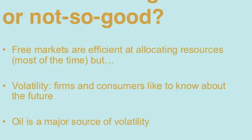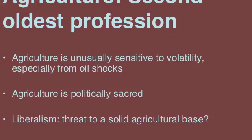Part of the problem with this is that while volatility might not have a big impact in the long run, it has a very large impact on the fortunes of individuals in the short run. Firms and consumers like to know about the future because that's how they make investment decisions, purchasing decisions, pricing decisions, and a lot of other decisions that are important for an economy. Oil is one major source of volatility in the economy, and one instance where oil shocks are especially effective is in the agriculture industry. Agriculture is already fairly sensitive to volatility because it has fairly low margins and is subject to unpredictable events such as weather and pest species.